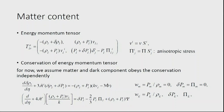Looking at the energy-momentum tensor, the background part has density and pressure, plus their perturbations. For perturbations, two new quantities appear: V, the velocity (defined as the spatial derivative of a scalar function), and the anisotropic stress, which is the traceless part of the pressure. For perturbations, you have two new quantities: velocity and anisotropic stress.